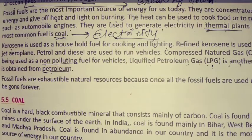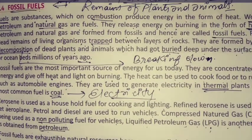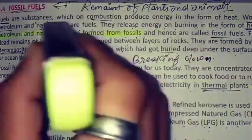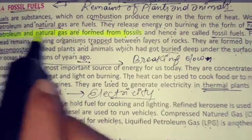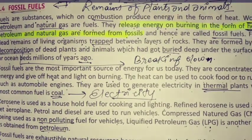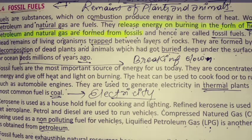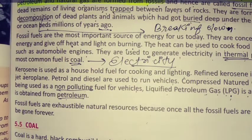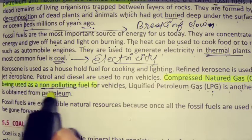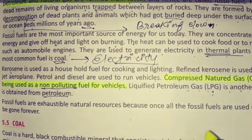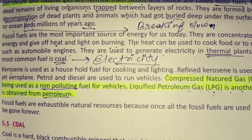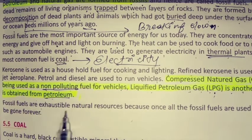Underline these highlighted points: coal, petroleum, and natural gas are formed from fossils. They release energy on burning in the form of heat and light. CNG — compressed natural gas — is now being used as a non-polluting fuel for vehicles. LPG is a fuel obtained from petroleum. Fossil fuels are exhaustible natural resources because once all the fossil fuels are used up, they will be gone forever — we cannot bring them back.